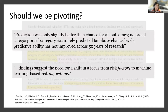Specifically, in this abstract snippet, we see the authors present two major points: predictive ability has not improved across 50 years of research, and findings suggest the need for a shift in focus from risk factors to machine-based learning algorithms.